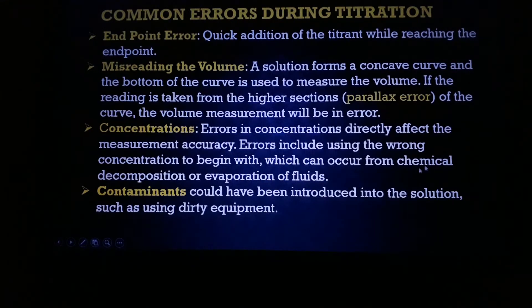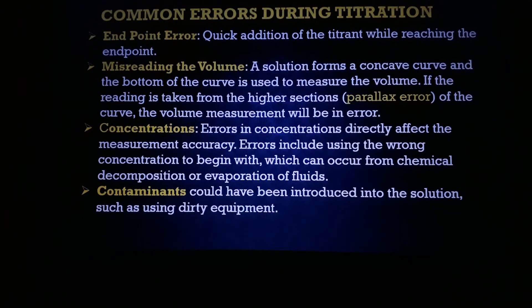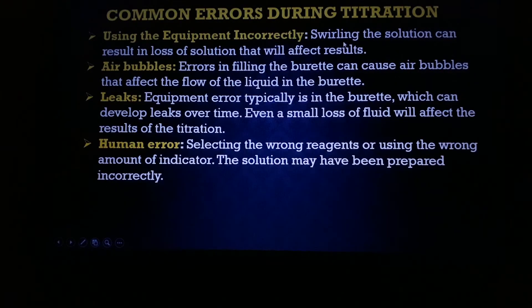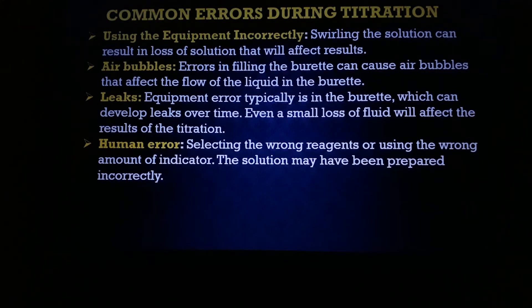Concentration errors also directly affect measuring accuracy; they can cause chemical decomposition and affect fluid operations. Contaminants are another source of error — dirty equipment or dirty glassware, contaminants from reagents, solutions, or water can participate in the reaction and give incorrect results. Using equipment incorrectly is also an issue — for example, using a larger burette for a small titration volume also leads to errors.